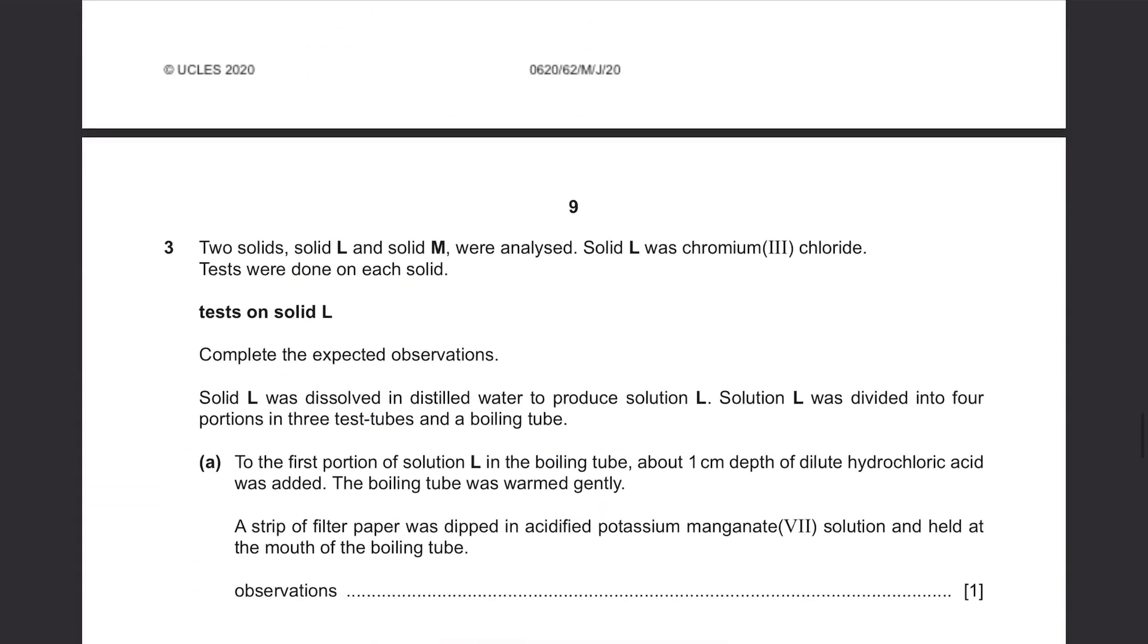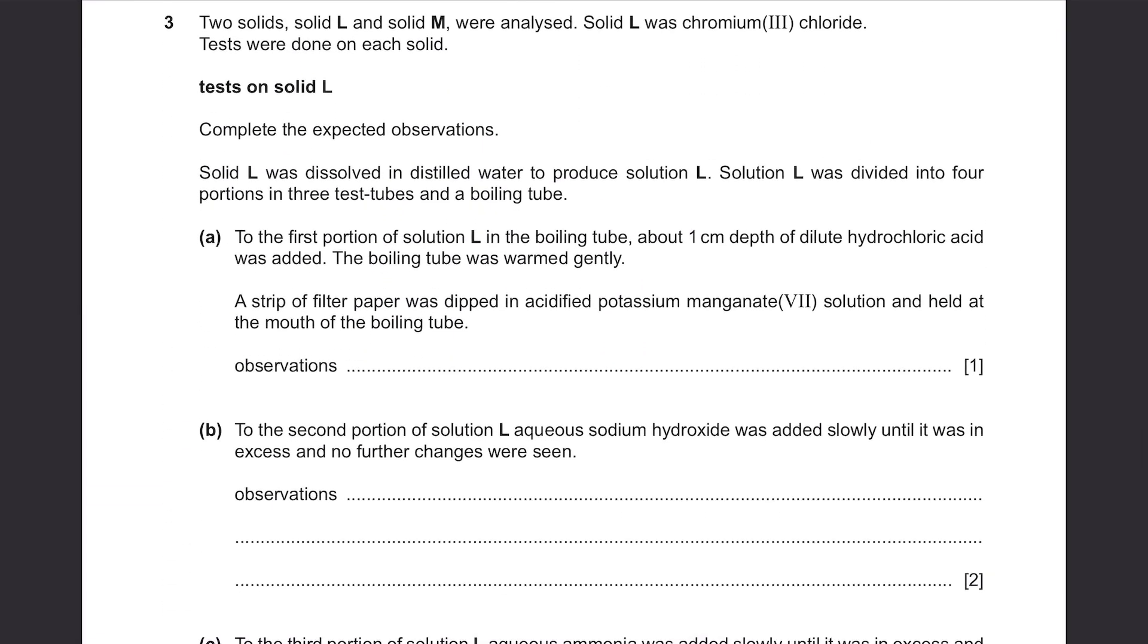Question 3: Two solids, solid L and solid M were analyzed. Solid L was chromium chloride. Tests were done on each solid. Tests on solid L: Complete the expected observations. Solid L was dissolved in distilled water to produce solution L. Solution L was divided into four portions in three test tubes and a boiling tube.